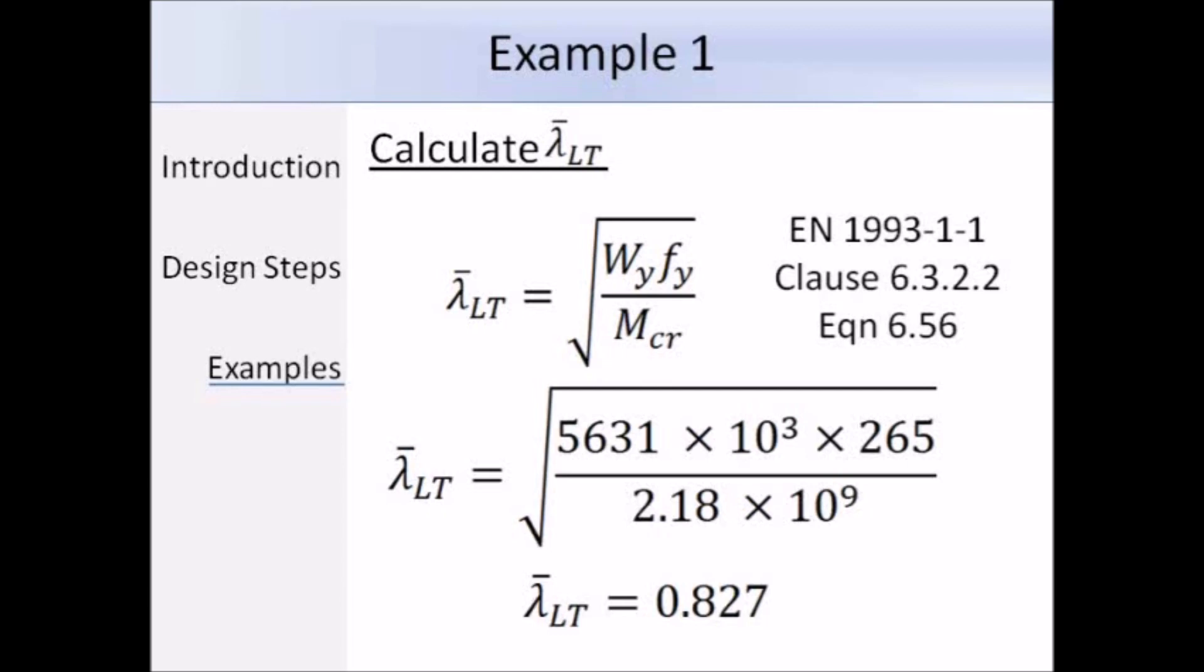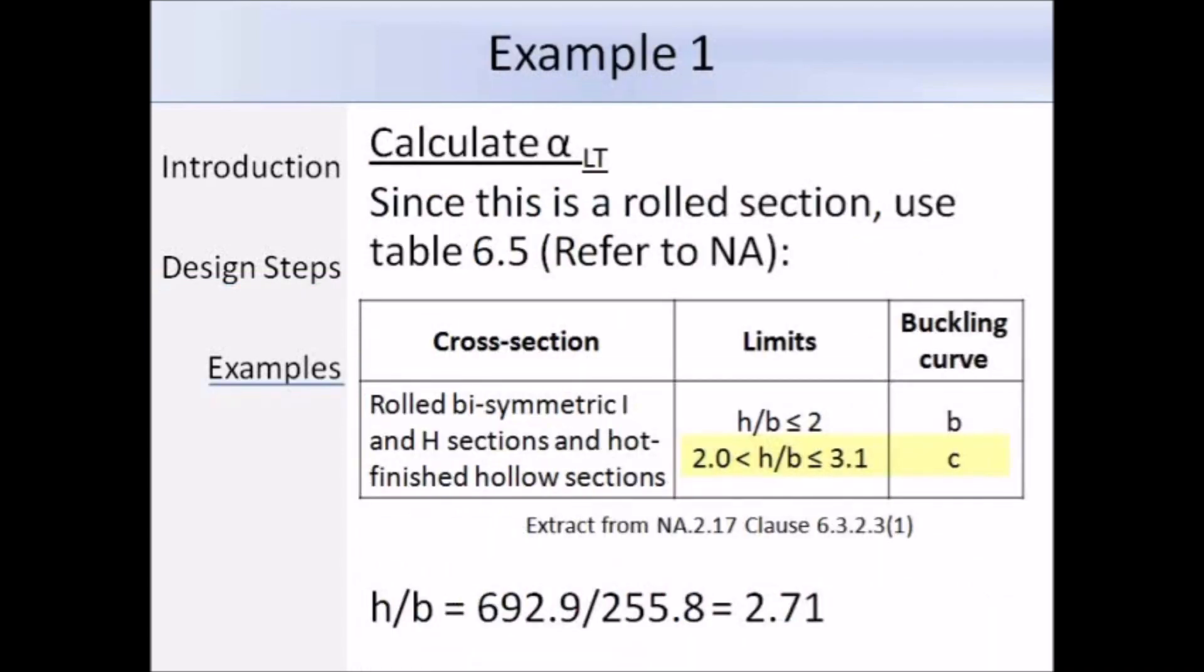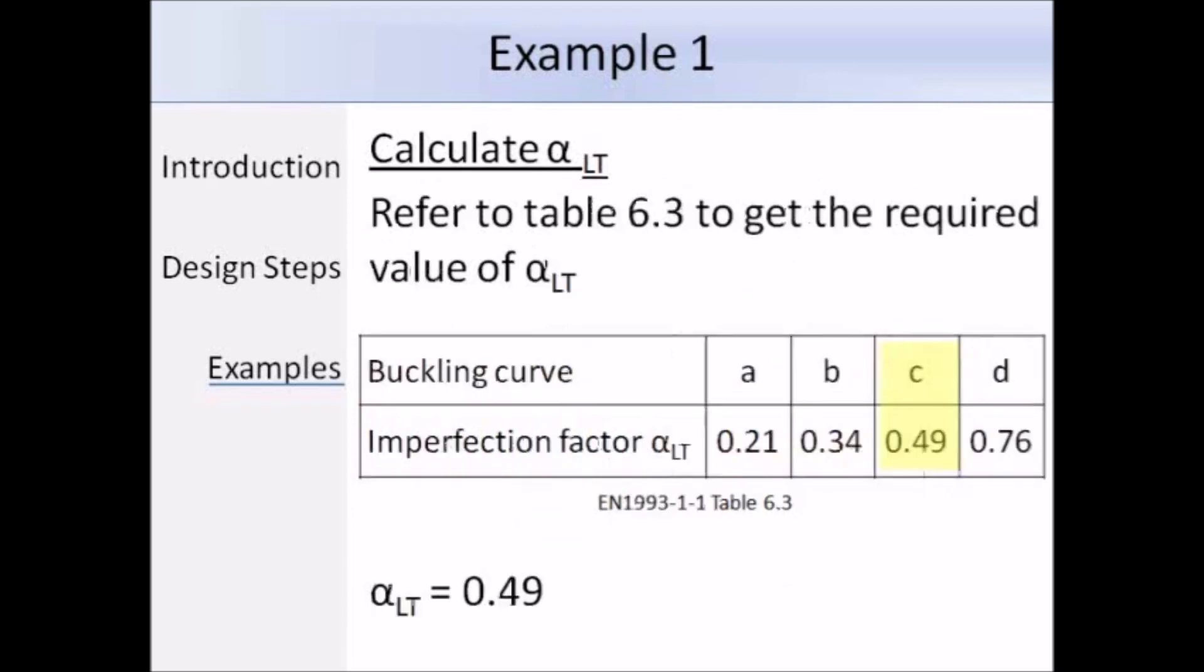Next step then is to work out alpha LT. So we're dealing with a rolled section, so we can use the special case, so we need to look at table 6.5. And there is a note in the eurocode that tells us that the UK National Annex has changed the values of this table, so instead we need to refer to the National Annex NA 2.17 clause 6.3.2.3.1, and our height over breadth ratio is 2.71. So we're going to be using Buckling Curve C.